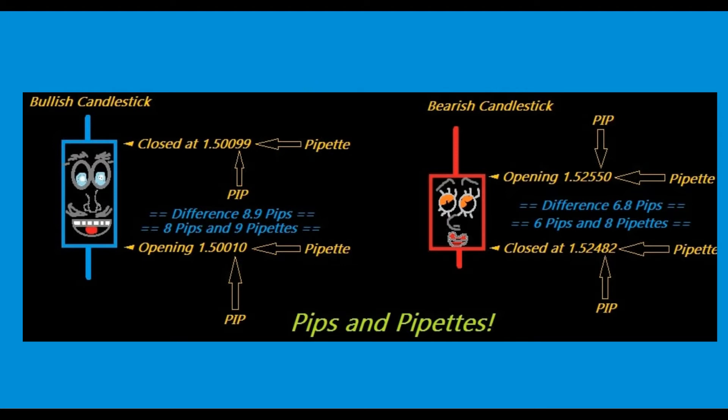What about the other example — the red candlestick, which opened higher and closed lower? In this case, the pip is also the 4th digit, which is 5, and it goes down to 1.52482. So it moved down by 6 pips and 8 pipettes — or 6.8 pips. That's how you identify which one is pips and which are pipettes.